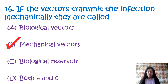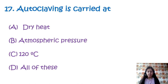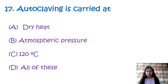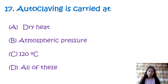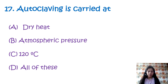Question 17: Autoclaving is carried at — option A: dry heat, option B: atmospheric pressure, option C: 120°C, option D: all of these. Autoclaving is a sterilization process that uses high pressure steam to kill microorganisms, even killing spores. The temperature used in autoclaving is 121°C (250°F) for 15 to 20 minutes. So the correct option is option C, 120°C.